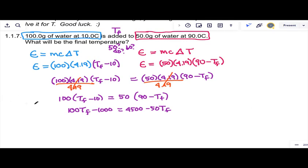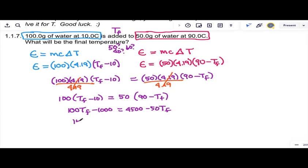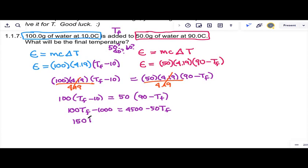So if your last math class wasn't too long ago, you'll remember we want to get all of our variables over to one side of this and all of our plain old numbers to the other side. So if we add 50 T final to each side or just take this to the left and flip its sign, we get 150 T final.